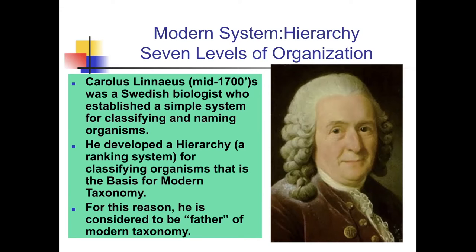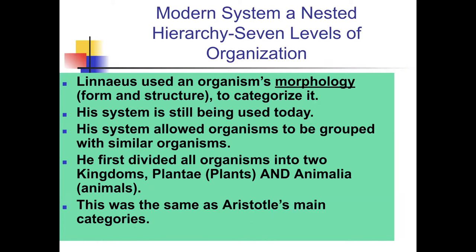Linnaeus developed a hierarchy—a ranking system for classifying organisms—that is the basis of modern taxonomy today. For this reason, he is considered the father of modern taxonomy. He used an organism's morphology, meaning its form, shape, and structure, to categorize it. His system allowed organisms to be grouped with similar organisms. He first divided all organisms into two kingdoms: Plantae and Animalia.